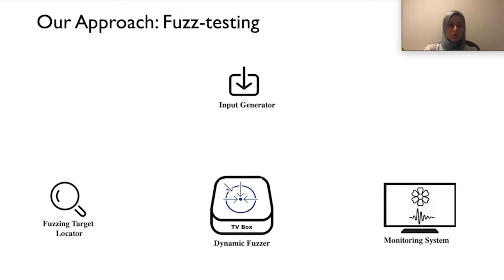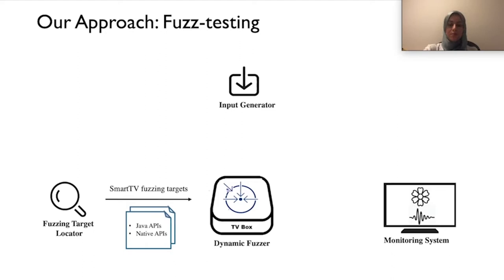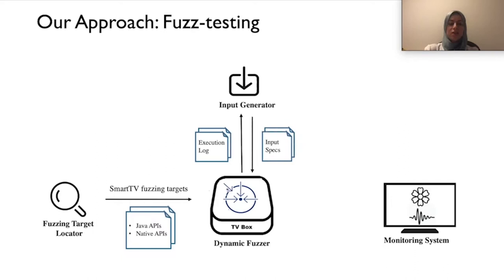Given a target Smart TV ROM, the fuzzing target locator analyzes the system services and identifies APIs to be fed to the fuzzer, including both Java APIs and native APIs. The dynamic fuzzer generates test cases for each target API, initially with random inputs. Our novel input generation module leverages dumped execution logs to spot potential input validation messages, infers valid input specifications, and feeds them back to the dynamic fuzzer, driving it towards code regions guarded by these validation messages. This closed log-guided fuzzing loop continues until no newer inputs can be recovered from the logs.